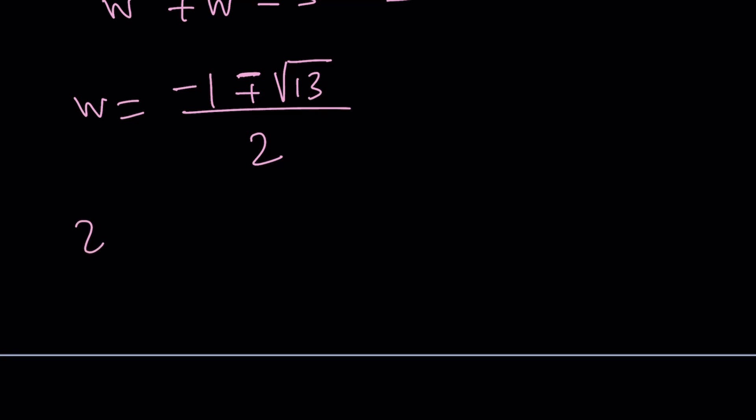One thing you should know about z plus 1 over z. If z is real, this number is either greater than or equal to 2 or less than or equal to negative 2. You know why? Because that's the maximum and minimum values for when z is positive and z is negative. Anyways.